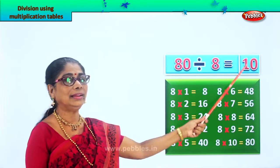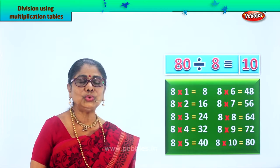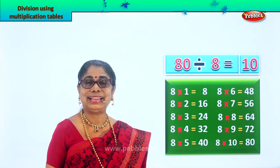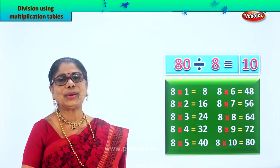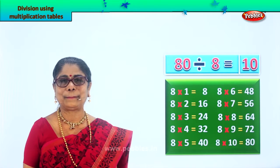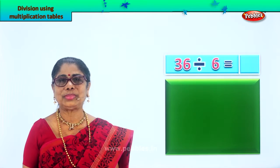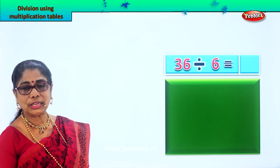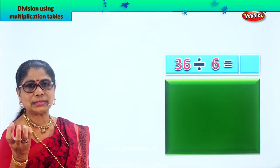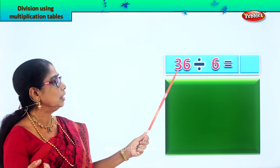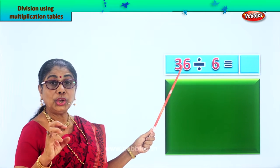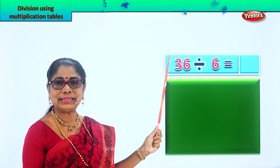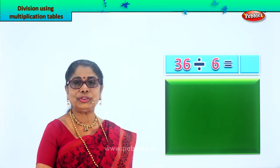Now you learn to find the answer using multiplication. Let's look at another sum. We have 36 items to be grouped into 6. 36 divided by 6 — we need to find the answer, so we should know the 6 times table.